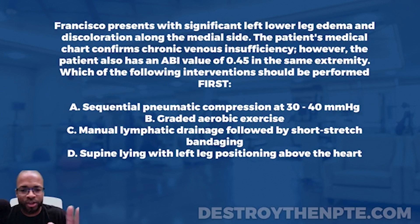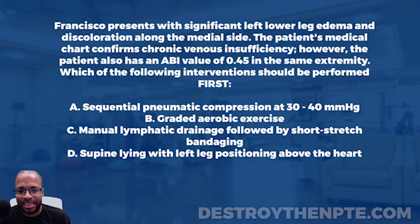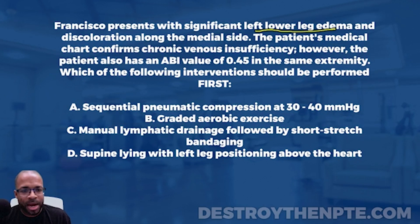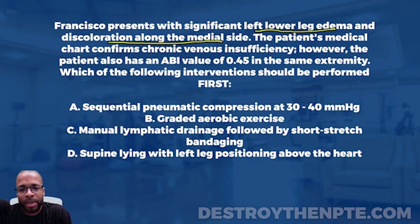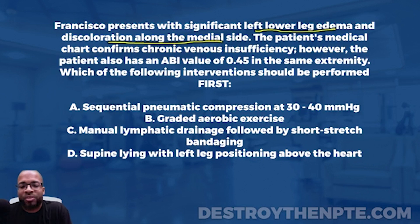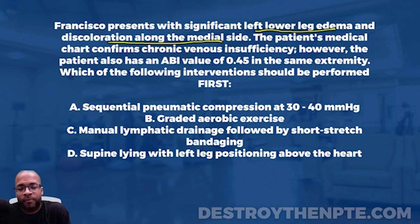Let's go to the top of this one — it's talking about peripheral vascular disease. We need to break it down piece by piece. Francisco presents with significant left lower leg edema and discoloration along the medial side. When a patient presents with left lower leg edema and discoloration on the medial side, that's really consistent with venous insufficiency.